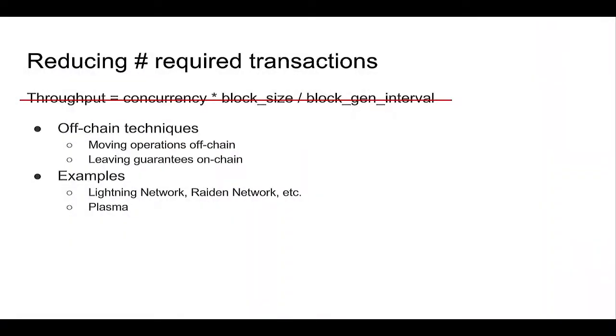Examples of off-chain techniques fall into basically two categories. One is the Lightning Network, proposed by the Bitcoin community, and the other is the Raiden Network, proposed by the Ethereum community. There is also another work called Plasma, which hasn't been implemented yet, proposed by a Lightning author and an Ethereum founder. I'll talk about these two kinds of work in the next few slides.